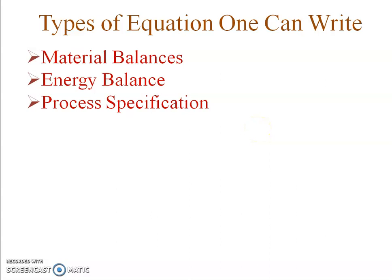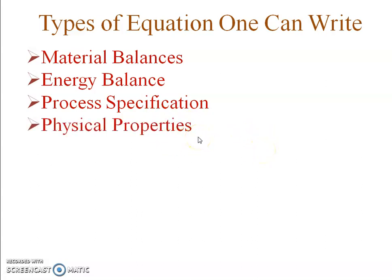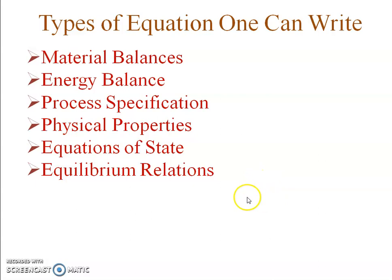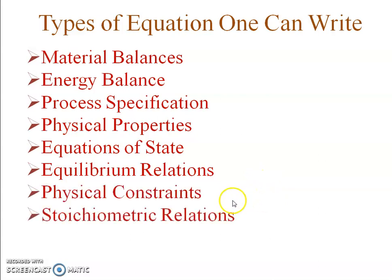Fourth, physical property relations such as density relations. Fifth, equations of state — for example, when dealing with an ideal gas, you use the ideal gas equation. Sixth, equilibrium relations — when two phases are in equilibrium, you can write equilibrium relations, which we'll encounter in later videos. Also, physical constraints apply, such as mole fractions or mass fractions summing to one.